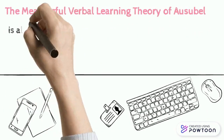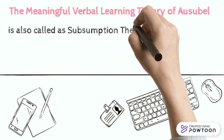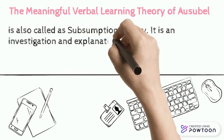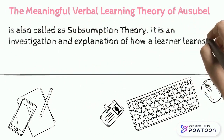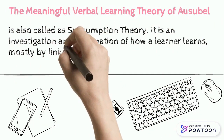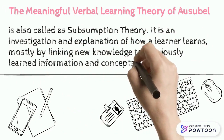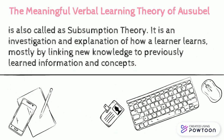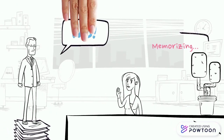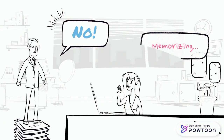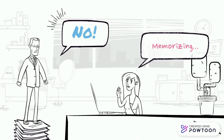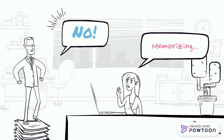The meaningful verbal learning theory of Ausubel is also called subsumption theory. It is an investigation and explanation of how a learner learns, mostly by linking new knowledge to previously learned information and concepts. Most importantly, to ensure meaningful teaching, it is necessary to avoid rote memorization of facts.